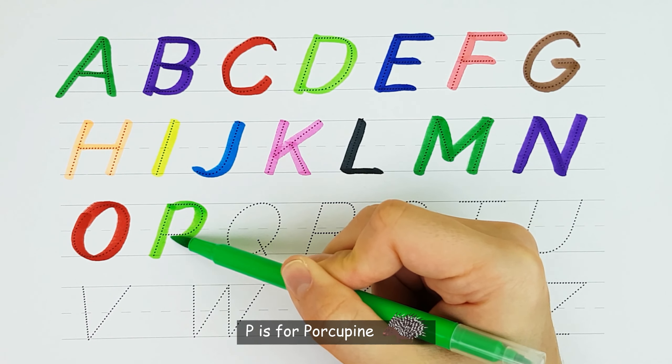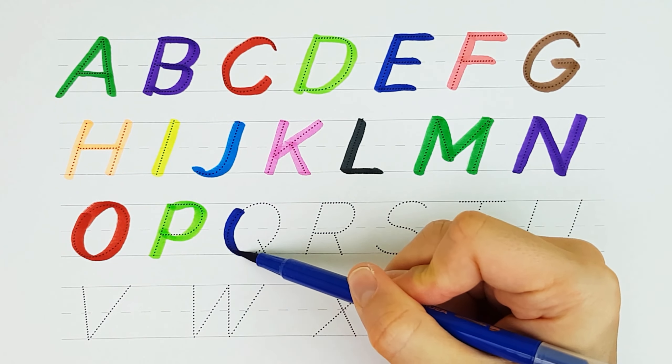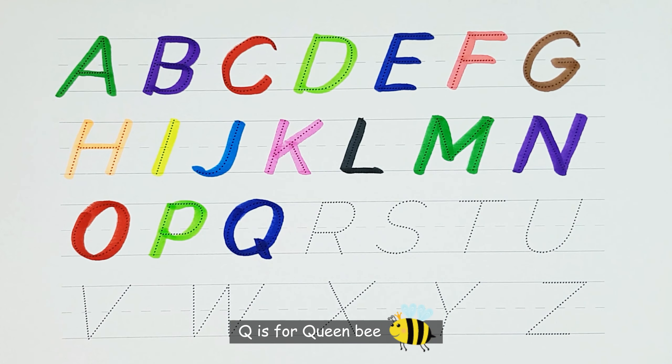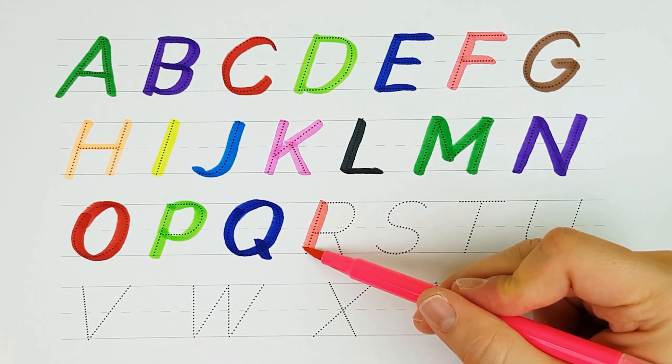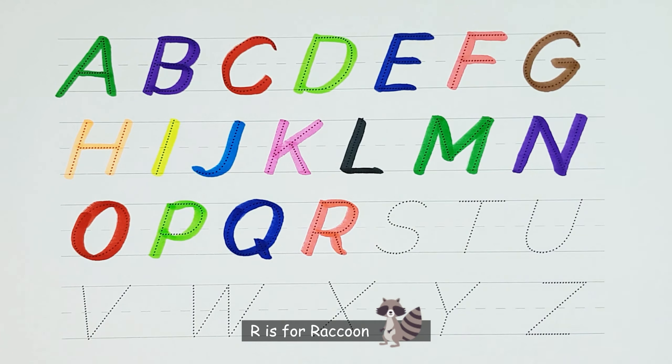P. P is for Porcupine. Q. Q is for Queen Bee. R. R is for Raccoon.